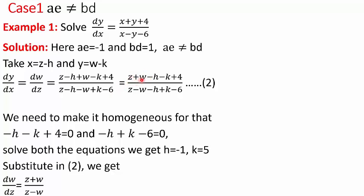Keep all z and w terms together, and collect h, k, and constant terms. We want to reduce −h − k + 4 = 0 and −h + k − 6 = 0. If we can make these zero, we get the differential equation dw/dz = (z + w)/(z − w), which can be solved using homogeneous differential equations. Solving the simultaneous equations gives h = −1 and k = 5. Substituting these values gives dw/dz = (z + w)/(z − w).